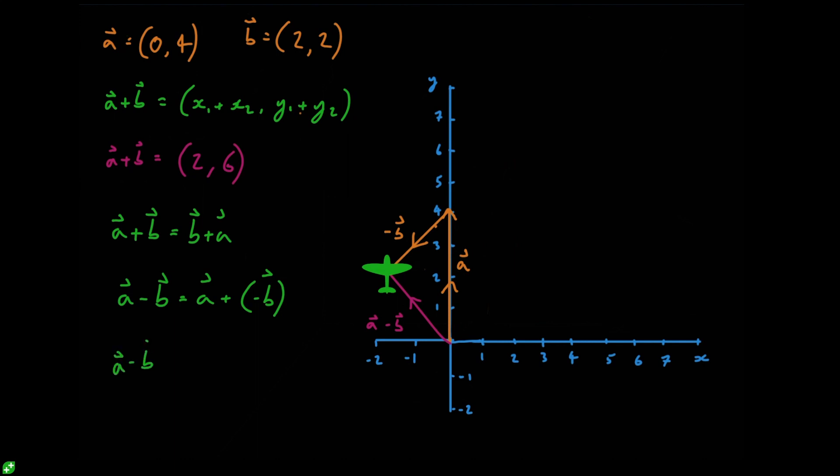So the vector a minus the vector b is going to be equal to 0 minus 2, so that's going to be -2, and then 4 minus 2 is going to give us 2. And that checks out because we're at (-2, 2) on our graph here.